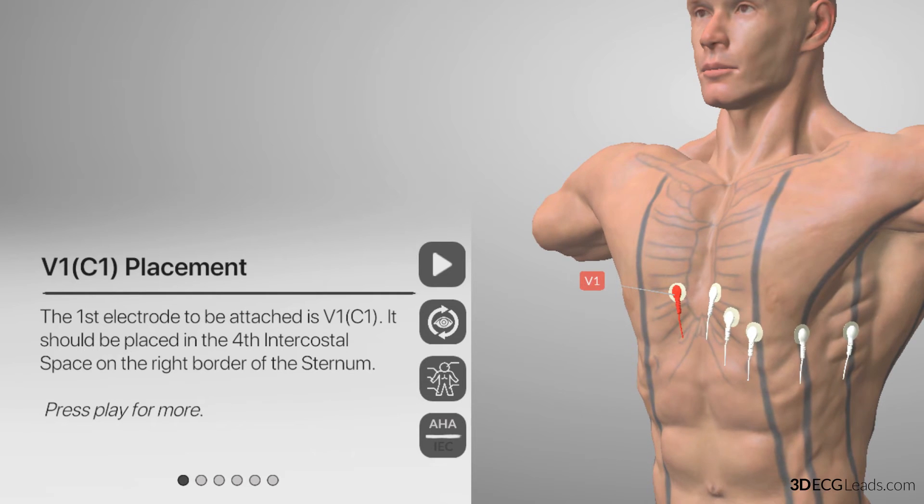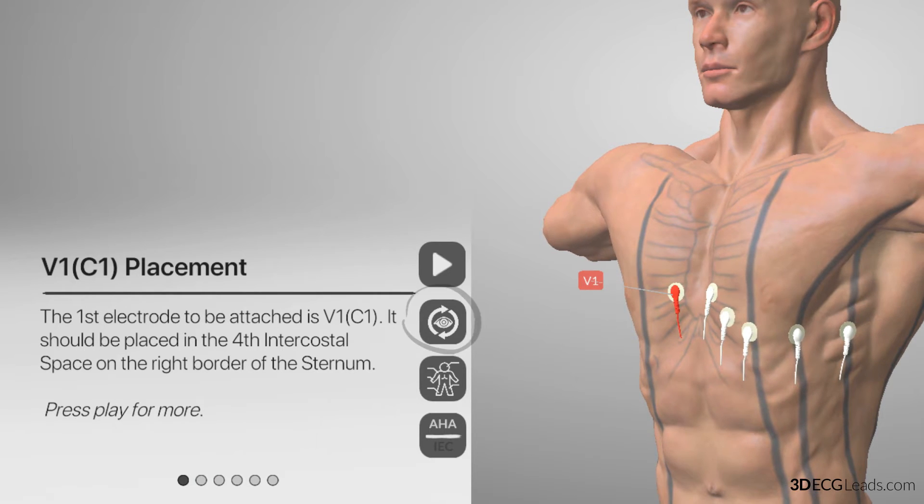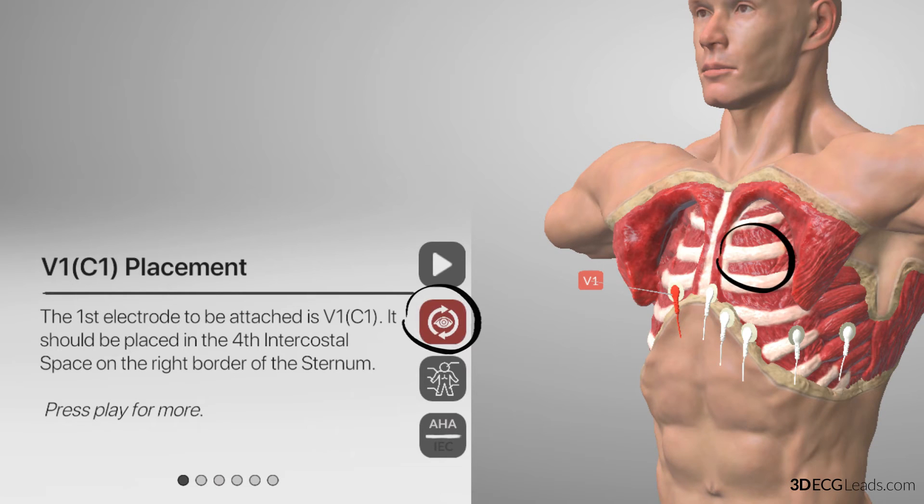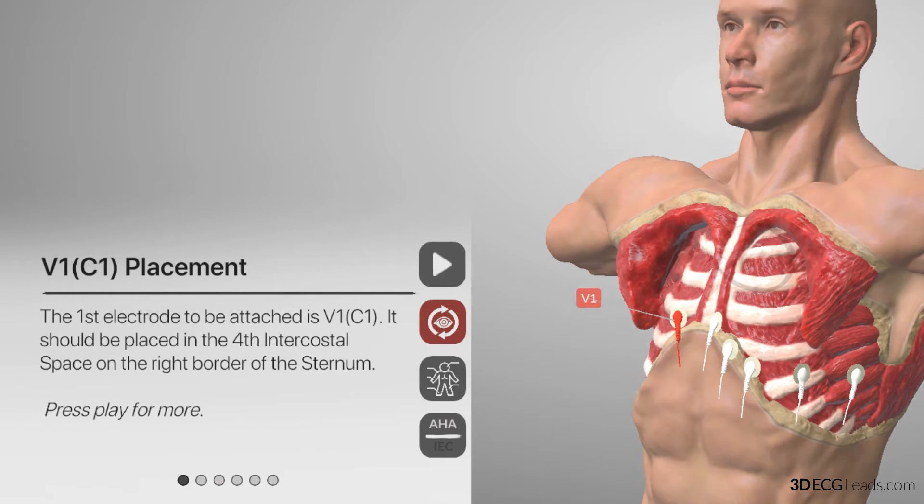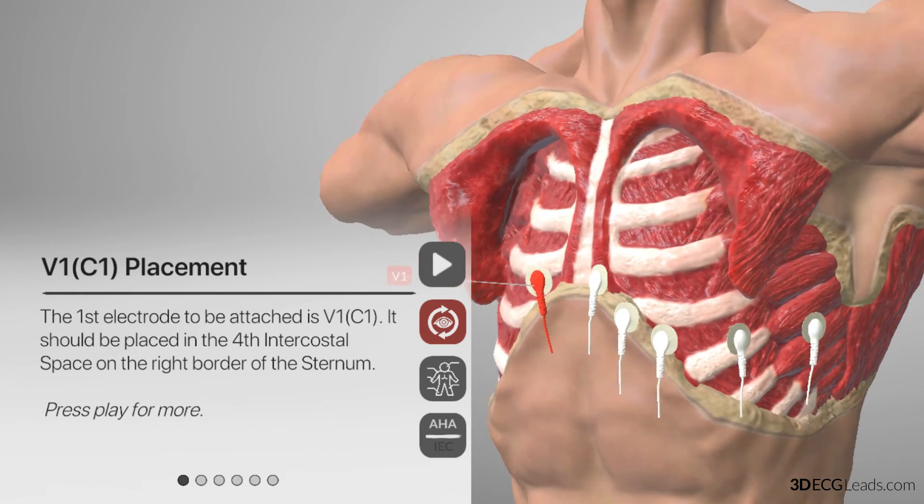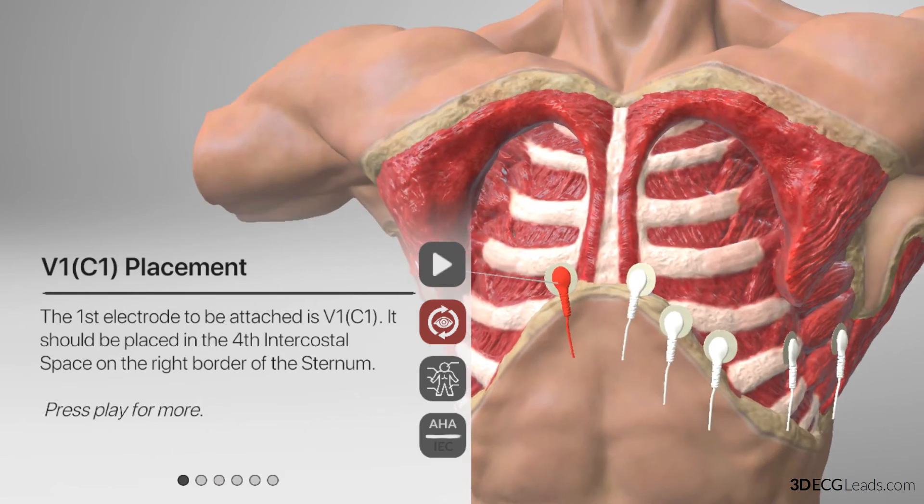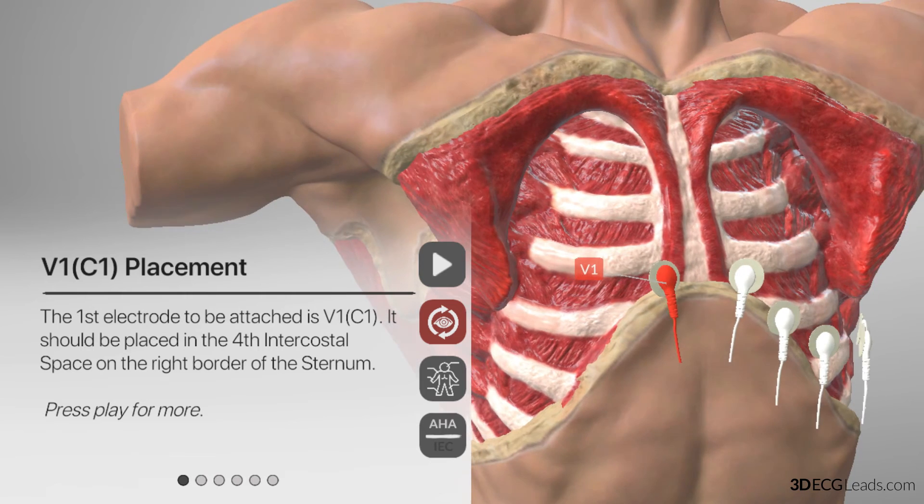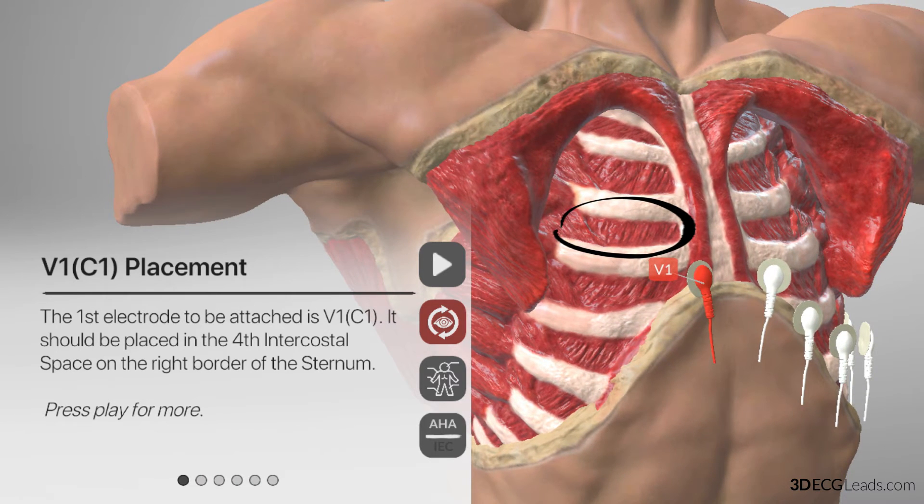To do this, we can switch the 3D model to its secondary view, which is the second square button down with the eye icon. Now we can see the ribs as they travel around the chest, and how they articulate here with the breastbone, also known as the sternum. As you can see, there is a gap between the ribs that is filled with some muscles, and this gap is known as the intercostal space.